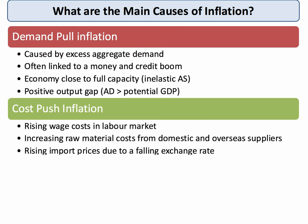Cost push inflation is on the supply side of the economy and it happens when producers of goods and services experience an increase in their costs and decide to increase their prices in order to protect their profitability. Classic examples include increasing wage costs, higher prices for important raw materials and component parts, and an increase in the cost of imported goods and services, perhaps due to a falling exchange rate.